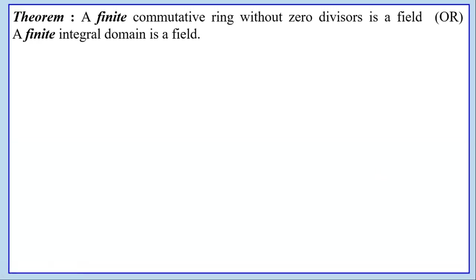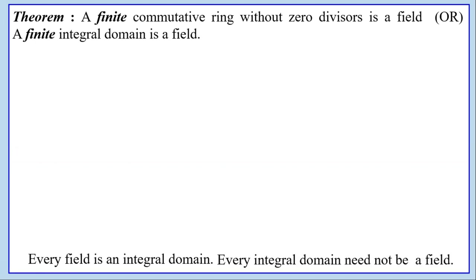We shall now prove a theorem which states that a finite commutative ring without zero divisors is a field, or equivalently, a finite integral domain is a field. We already proved that every field is an integral domain, but every integral domain need not be a field. However, a particular type — a finite integral domain — is a field.